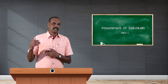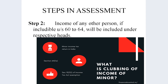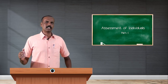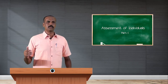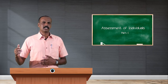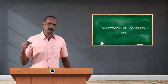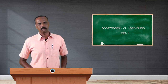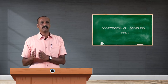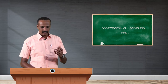The second step is clubbing of income under sections 60 to 64. If I have income, I pay tax on my income. But sometimes I also have to pay tax on my minor child's income, my spouse's income, or income of any other person which is taxable in my hands. For example, if a minor child's income is not taxable in their hands, it should be taxable in the parent's hands. Similarly, if a spouse's income is lower and was not earned out of her own professional capacity, that income should be included in my income. Any such clubbed income must be added to the gross total income.